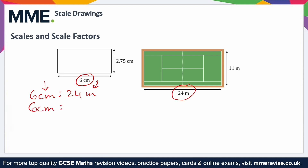I'm going to convert both to centimetres. There are 100 centimetres in a metre, so 24 times 100 gives 2400 centimetres. From there we just simplify the ratio: 6 goes into 6, and also into 2400, because 6 goes into 24 and 2400 is just a multiple of 24. Dividing both by 6 we get 1 to 400. We can drop the units now since both values are in the same unit — this is our scale.